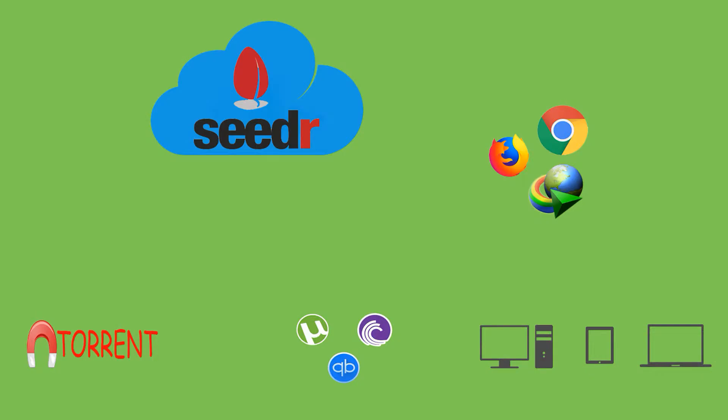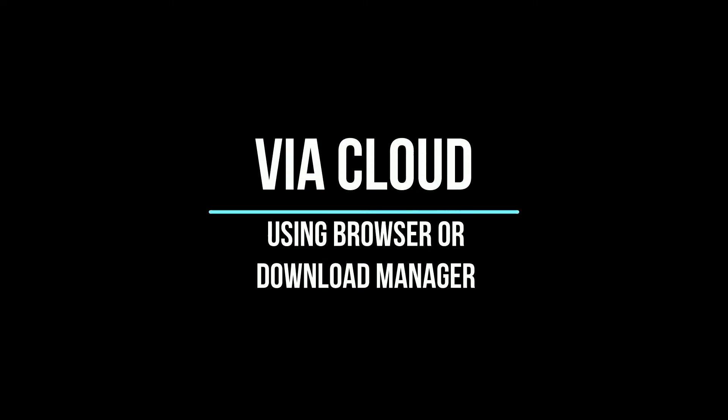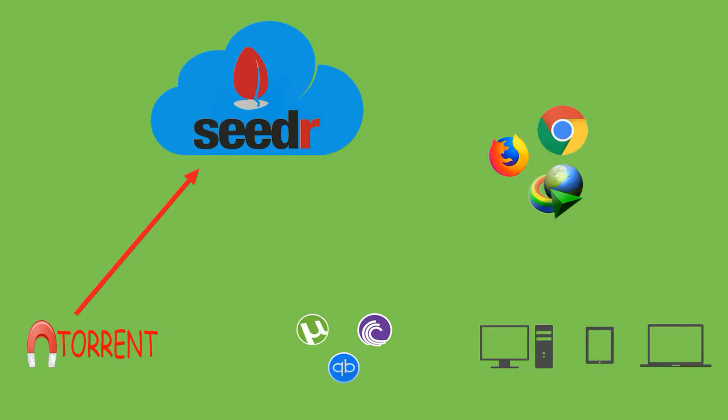There are two ways to download a torrent. First, the basic way — using a torrent client to download the torrent. Second, the cloud computing way — you give the torrent file to a cloud computing server, they download the torrent, and then you download the file from the browser or any download manager. And that's it.